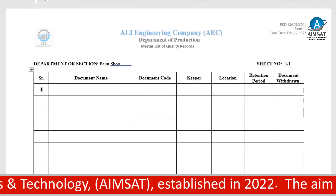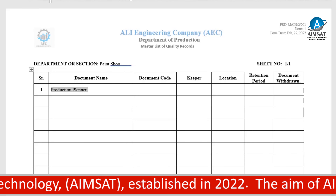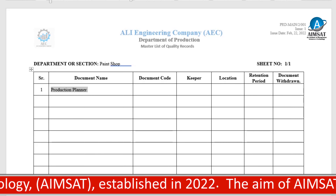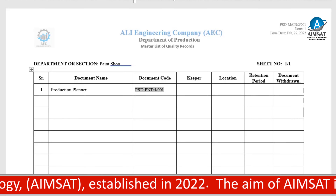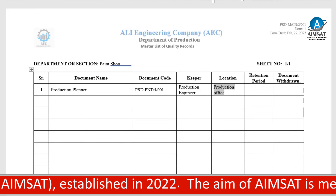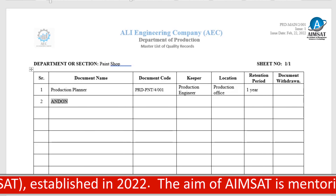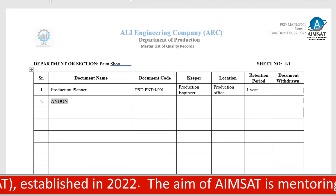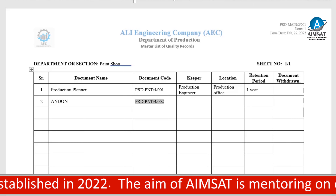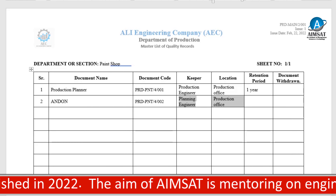Production Planner is the first quality record. Its document code, Keeper is Production Engineer, and Location is Production Office. Retention period is 1 year. Similarly, End On Production P&T 4002 — Keeper is Planning Engineer, Location is Production, and Retention is 6 months.